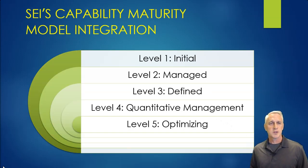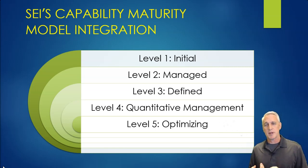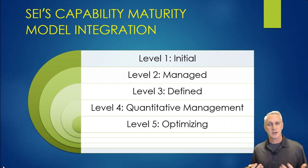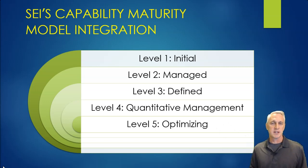The SEI version has: level one as initial use of project management, level two as managed — though that term doesn't communicate much on its own — level three as defined, level four as quantitative management, and level five as optimizing. These are all different models; they're not the only ones, but they're the four big ones commonly used.